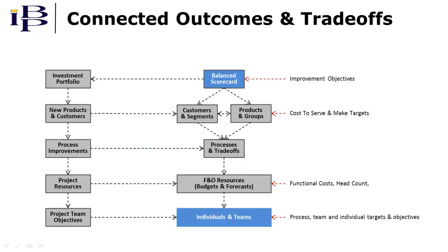Lastly, strategy is translated to the individual and team level. When we get to this point, people know the business targets they're supposed to achieve, they know that they have the capacity to achieve them, and they also know that they have the decision rights to make necessary changes. What's more, their personal goals and objectives are also defined. What results is full strategic alignment.